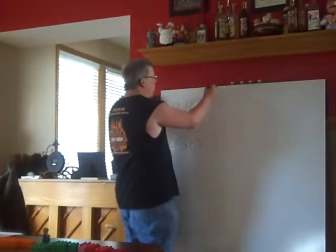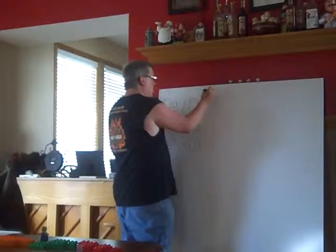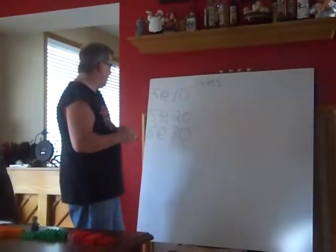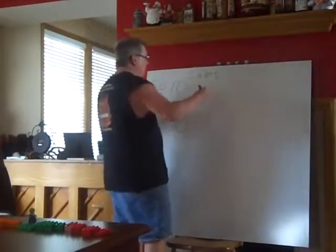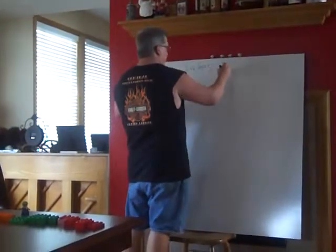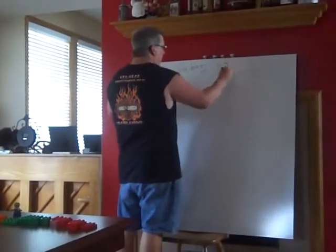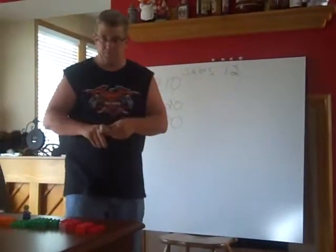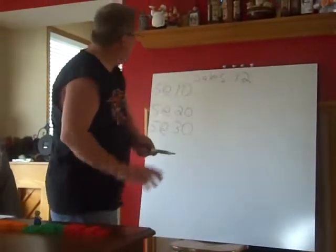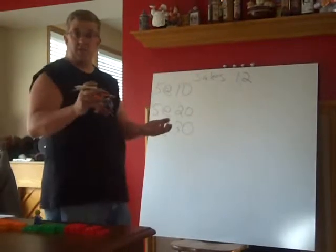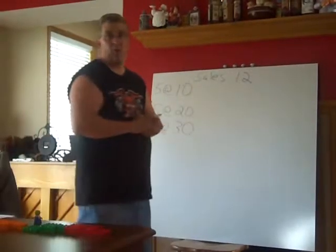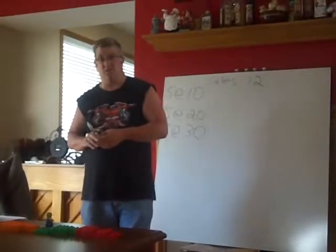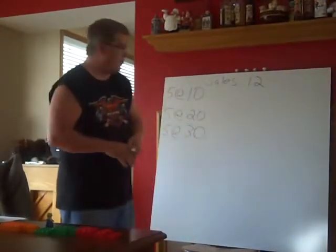First of all, we need to know what our sales were. We had sales during the period of 12 — so we sold 12 different items. For weighted average, the whole concept is that we're going to spread the cost of all this inventory equally over all of them.